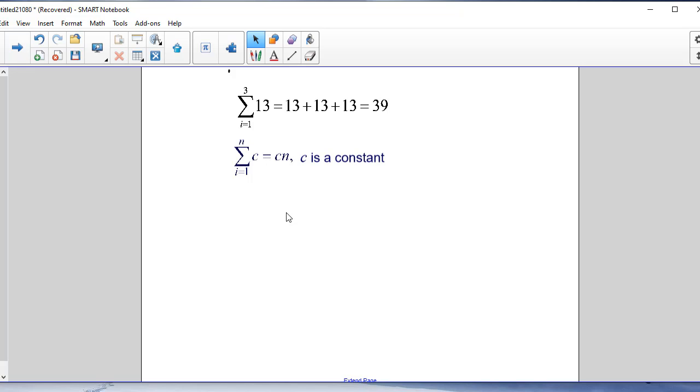Looking at our summation formula, in this case c is equal to 13 and n is equal to 3. So it's obvious that 13 times 3 is equal to 39, it gives us the same sum. We'll look at more examples of this later.